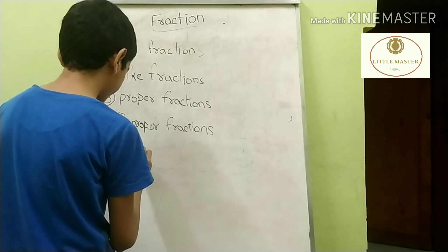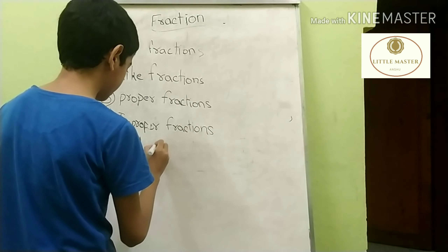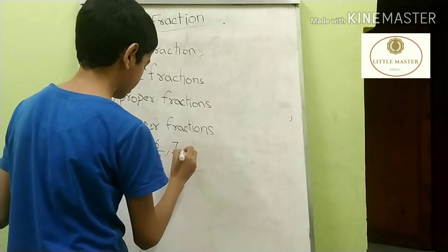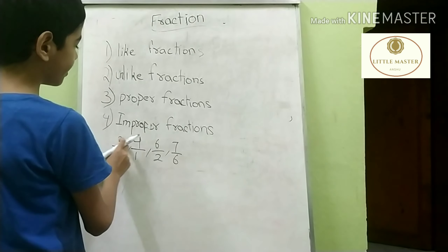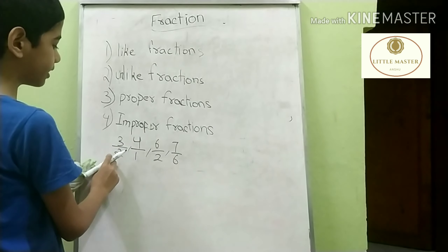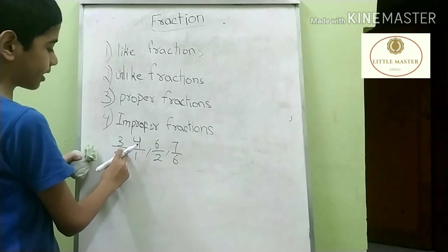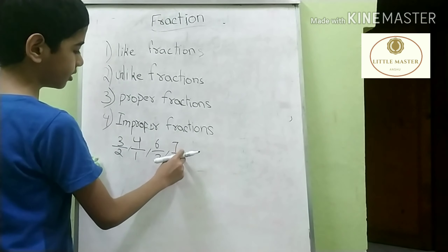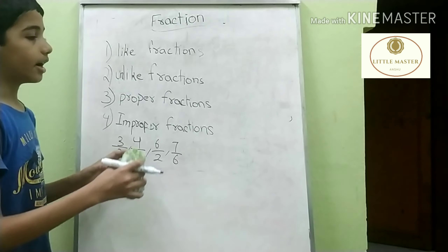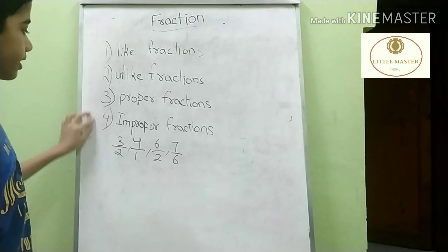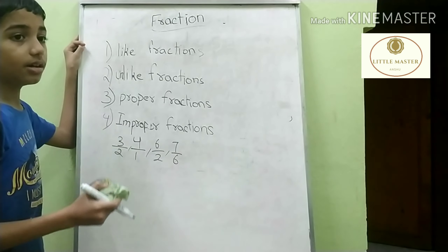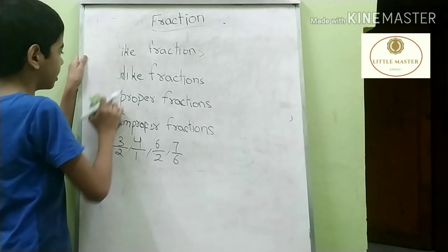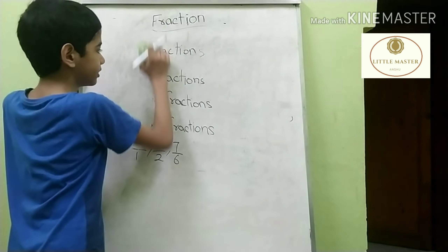Here, every numerator is bigger than the denominator. You can see: 3 is bigger than 2, 4 is bigger than 1, 6 is bigger than 2, 7 is bigger than 6. Now let's also learn how to change a mixed fraction to an improper fraction. I will erase this so you can see clearly.